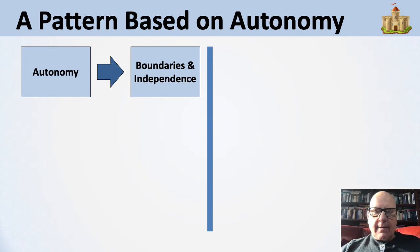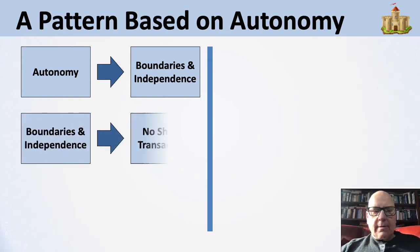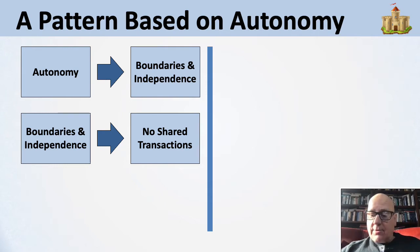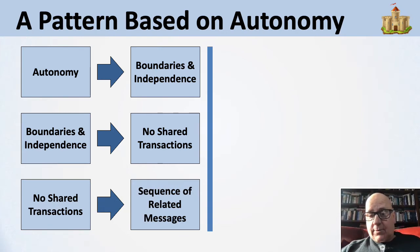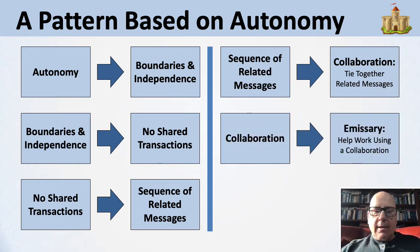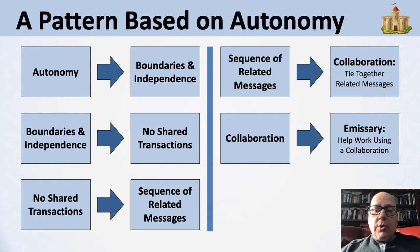This is a pattern based on autonomy. Autonomy means boundaries and independence — no shared transactions. There's no way I'm going to lock up my database waiting for what you decide if you're an outsider. I'm not going to take record locks or do transactions with you, but I will do messages and try to get work done. No shared transactions mean a sequence of related messages, and those messages need to be tied together. A formal notion of collaboration makes it easy for partners to tie together those related messages. Software running outside the autonomous boundary to help with the sequence of messages is a useful pattern seen in both human life and computing.